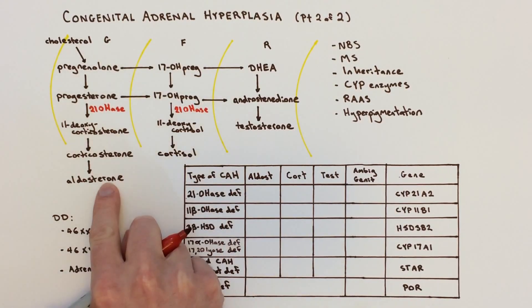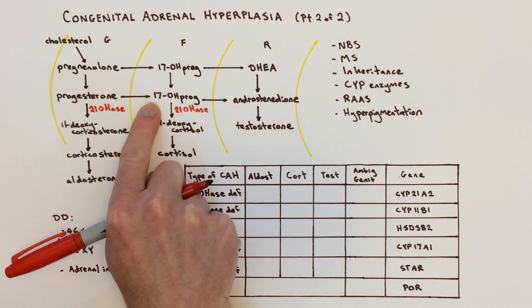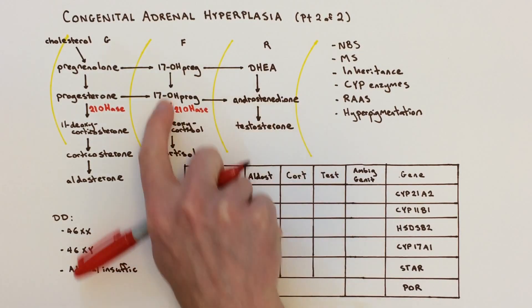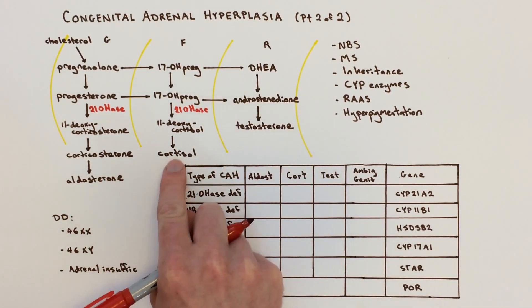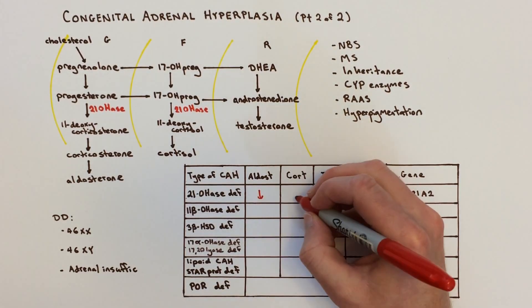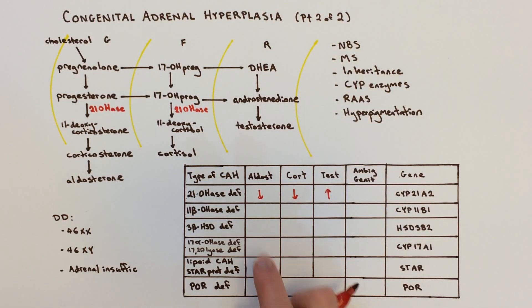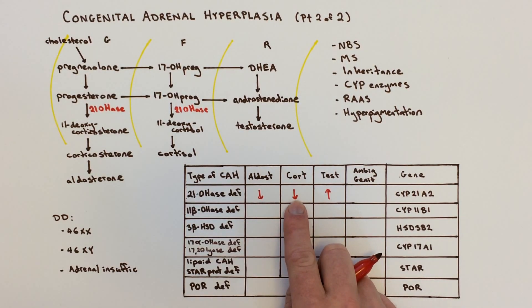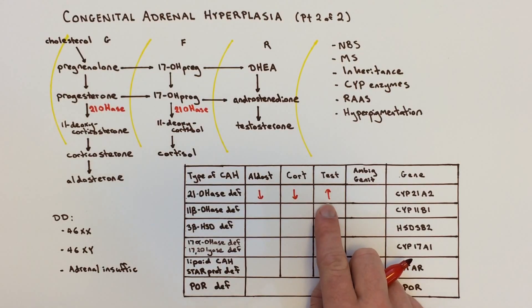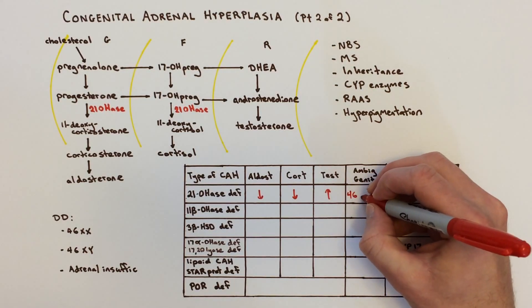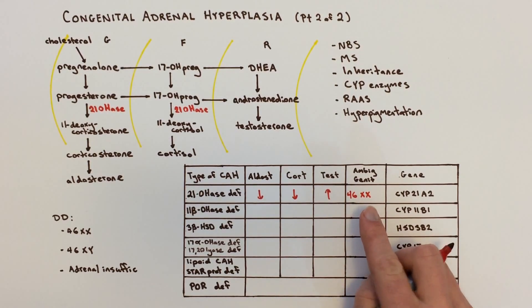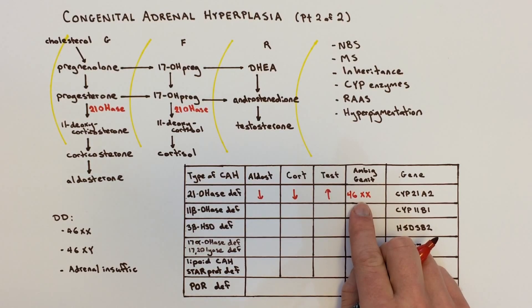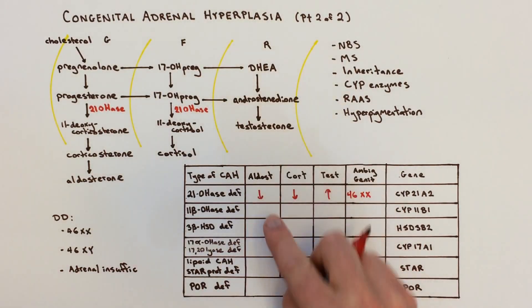With 21-hydroxylase deficiency, there are blockades leading to aldosterone and cortisol, so things back up. You get high 17-hydroxyprogesterone, then high androstenedione, which routes to testosterone. So testosterone was high, while aldosterone and cortisol were low. The phenotypic result: low aldosterone caused salt wasting, hypotension, and adrenal crises. Low cortisol meant the individual couldn't mobilize sugar in times of stress. High testosterone led to ambiguous genitalia in 46XX individuals, whose genitalia were virilized to look more male-like than expected.